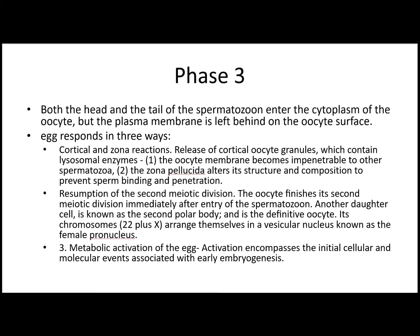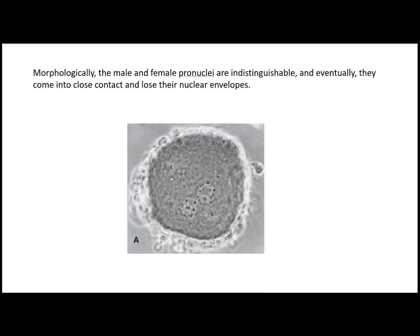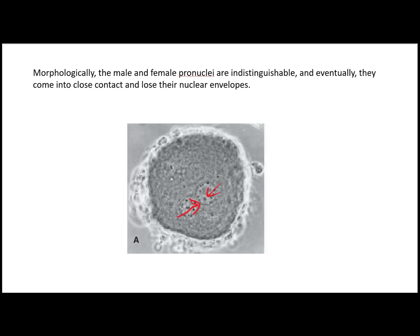After sperm entry, the egg responds in three ways. First is the cortical and zona reaction, as discussed. Second is resumption of the second meiotic division: the oocyte finishes its second meiotic division immediately after sperm entry, with release of the second polar body and formation of a definitive oocyte. Third is metabolic activation of the egg. For fusion, the male pronucleus swells and becomes indistinguishable from the female pronucleus; eventually they come into close contact and fusion occurs, restoring the diploid number of chromosomes.